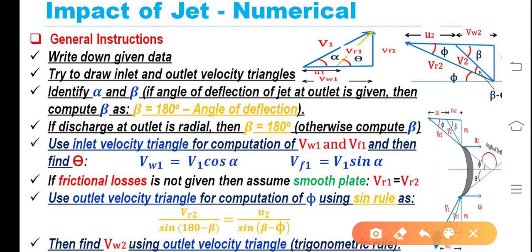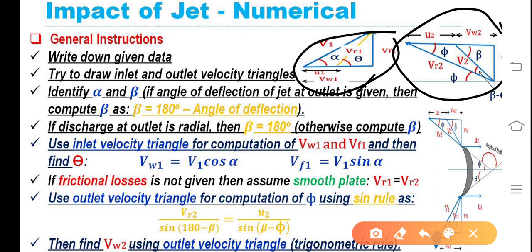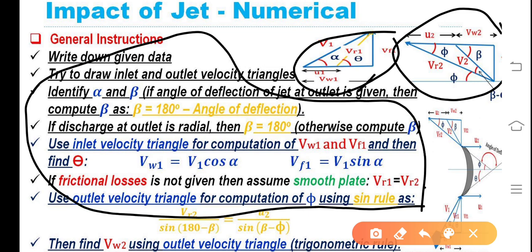Try to draw inlet and outlet velocity triangles. You can see here: inlet velocity triangle and outlet velocity triangle — write them clearly. Identify alpha and beta. If the angle of deflection of the jet at outlet is given, compute beta as beta equals 180 minus the angle of deflection. If you understand these general instructions, you will not commit errors; otherwise errors may creep in.